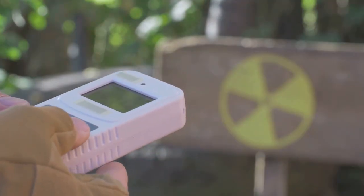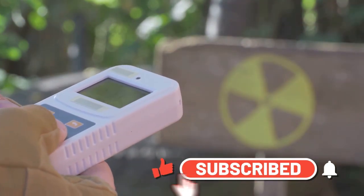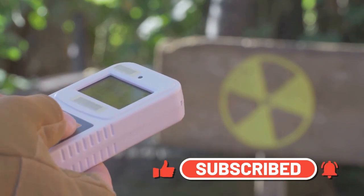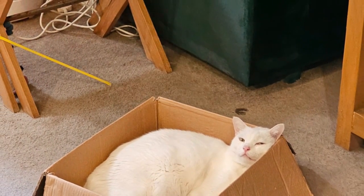If the radioactive material decays, the Geiger counter will detect it, triggering a mechanism that releases the poison, killing the cat. If the material doesn't decay, the cat remains safe and sound.